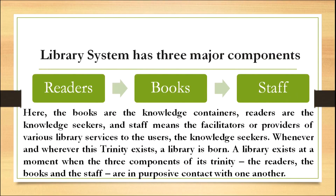A library system has three major components that a librarian must manage. The first component is the reader, the second is the book, and the third is the staff. The books are the knowledge containers, readers are the knowledge seekers, and staff are the facilitators or providers of various library services. Whenever this trinity exists, a library is born — when readers, books and staff are in purposive contact with one another.